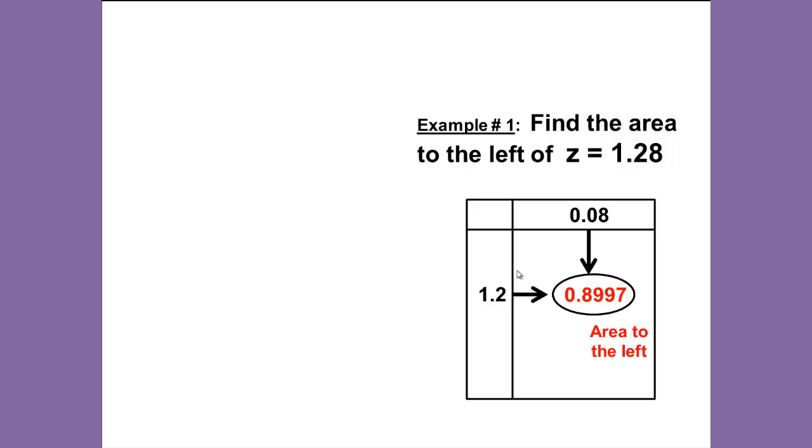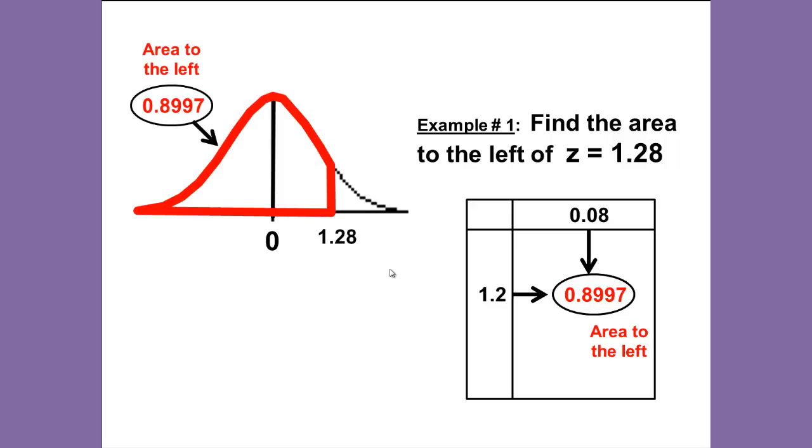Instead of just looking at the table, we can draw a picture that will help illustrate what's happening with your table value. A picture is worth a thousand words and will help us in later problems. Draw your bell-shaped curve. Draw 1.28 to the right of your zero, which means it is positive. Then, since we want to shade and find the area to the left, we'll highlight that area to the left.